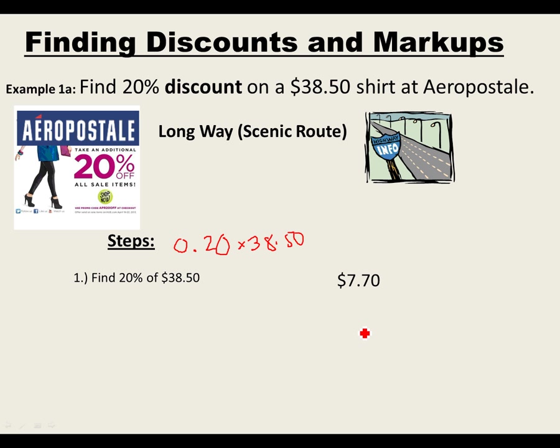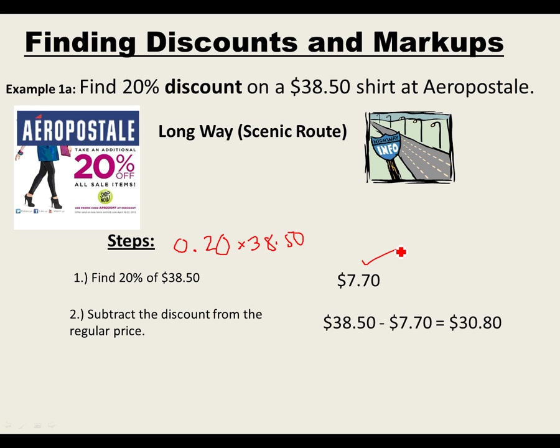You get 7.7, but we all know that means $7.70, not $7.07. Now subtract that from the regular price, because $7.70 is what you're saving — the amount being taken away from the original price. So we do $38.50 minus $7.70, and you get $30.80.